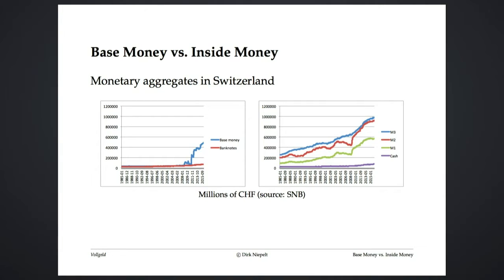On the right-hand side, you see money that we use as a means of payment. There's cash — that's the purple curve down here, pretty small. The large share is deposits: you have your transaction account at UBS. This is the money that we use for most of our payments, and this is called M1. There are different monetary aggregates — whether you also include some term deposits and savings accounts, you get larger aggregates. The central one would probably be the green one, M1.